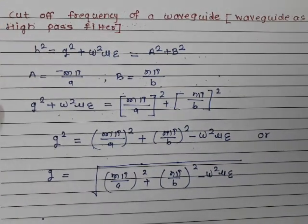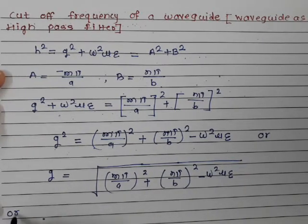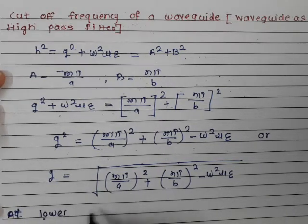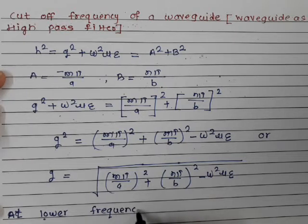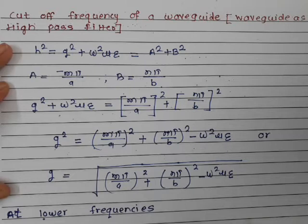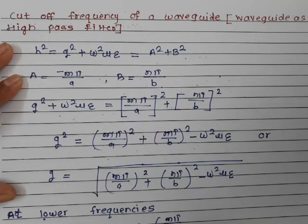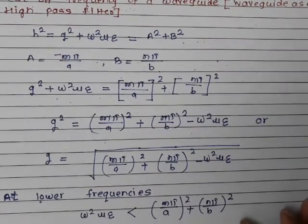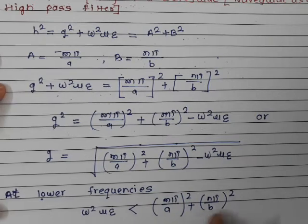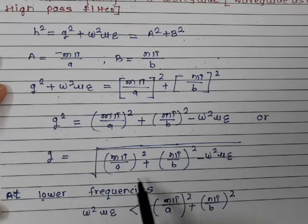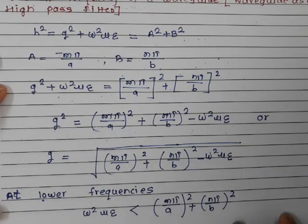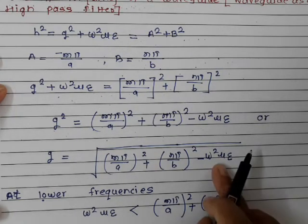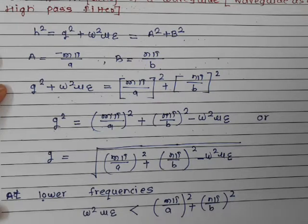Now what will happen at lower frequencies? At lower frequencies, gamma is not the propagation constant. At lower frequencies, ω²με will be less than (mπ/a)² + (nπ/b)². In this condition, the value being subtracted is smaller, so whatever we get is a negative value inside — meaning gamma will be a real and positive value.